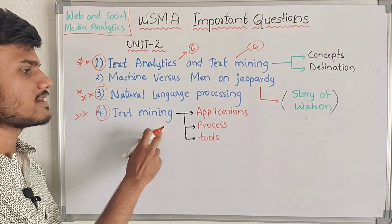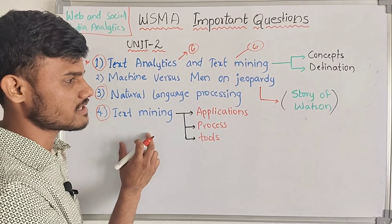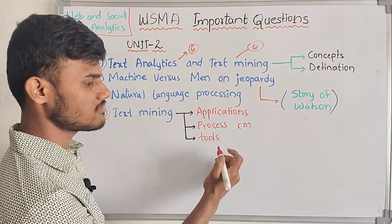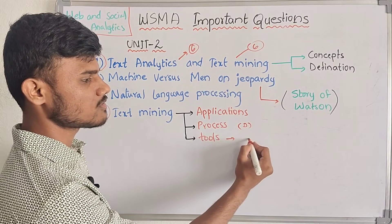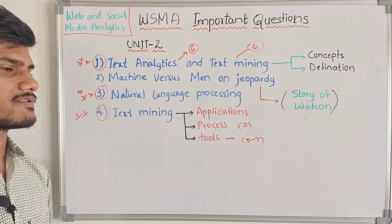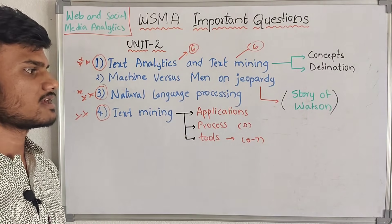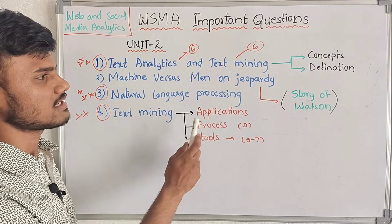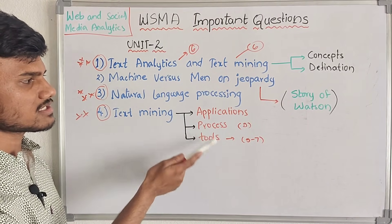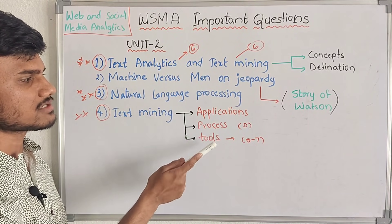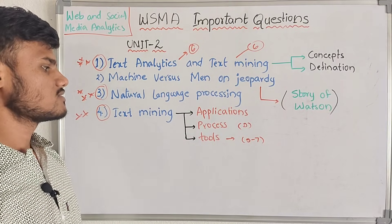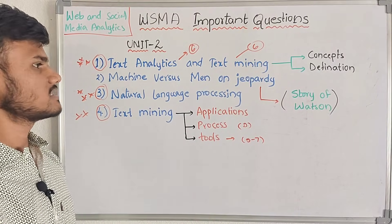And lastly, text mining. The concepts of text mining, applications, and process. Process diagram and tools — tools such as 5 to 7 tools are needed. Here you have this concept. You need this process. You need concepts to include in the text mining. So, this question is the first question.